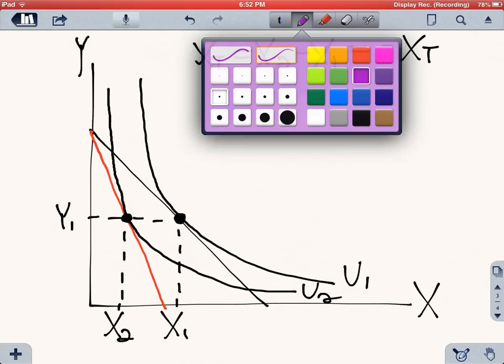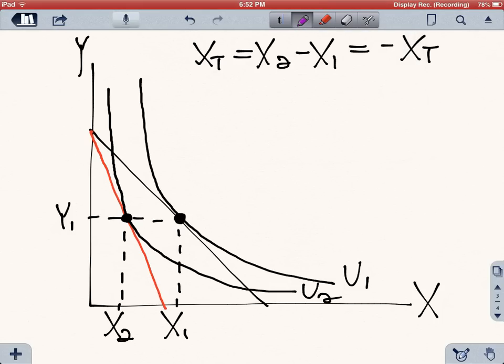So we do the following, we put the hypothetical scenario. What if we gave the consumer back the income that he lost enough to bring him back to the original utility curve?